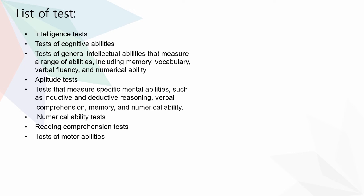The list of tests includes: Intelligence tests — tests of cognitive abilities and tests of general intellectual abilities that measure a range of abilities including memory, vocabulary, verbal fluency, and numerical ability. Aptitude tests — tests that measure specific mental abilities such as inductive and deductive reasoning, verbal comprehension, memory, and numerical ability. Also included are numerical ability tests, reading comprehension tests, and tests of motor abilities.